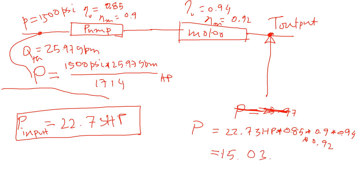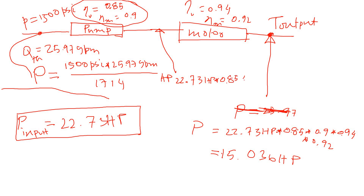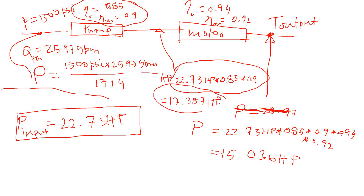The total power output at the motor shaft I calculated is 15.036 horsepower. If you're interested in the power between the pump and the motor, that uses only the pump efficiencies: 22.73 hp × 0.85 × 0.90 = 17.387 horsepower. That is the power output by the pump and the input to the motor.